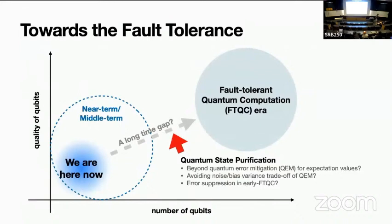This work can be seen as beyond quantum error mitigation, because we are targeting to reduce the noise in the quantum states themselves, instead of the expectation value, which is what quantum error mitigation mainly addresses. The implementation cost sits before fault tolerance, and is a little bit more demanding than near-term schemes.